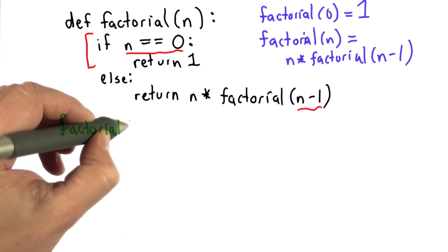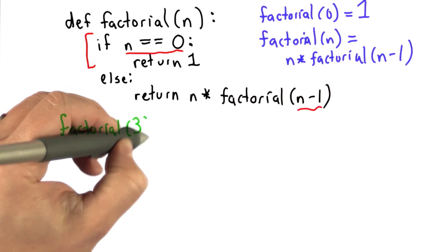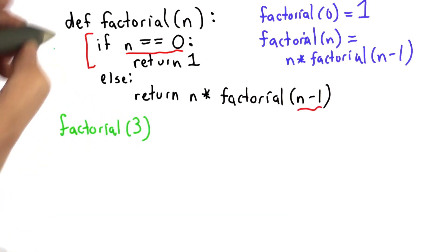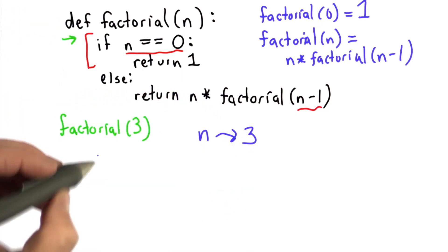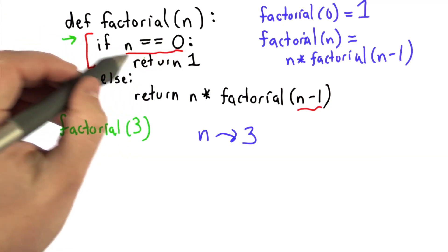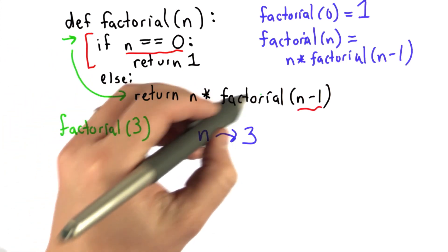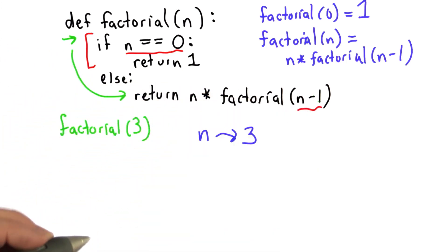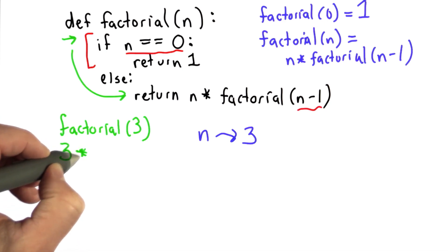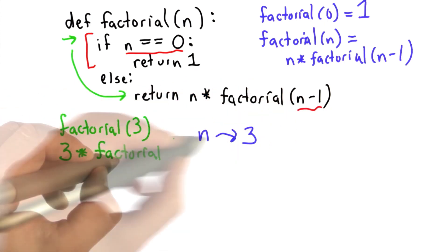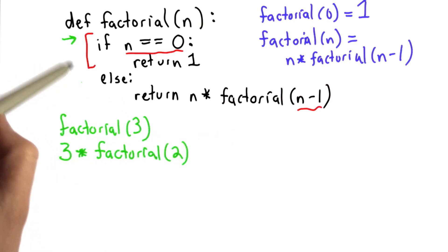Let's step through what happens when we run this code. Suppose we called factorial passing in 3. We're going to enter the procedure, and the value that n refers to is going to be 3 inside the body of factorial. We try the comparison - n is not equal to 0, so we don't return 1. We go to the else, which means we're going to return the value of n times factorial of n minus 1. Since n was 3, n minus 1 is 2.